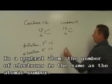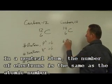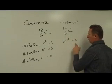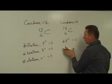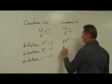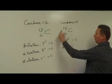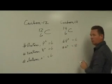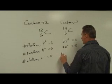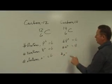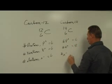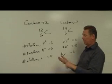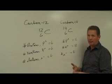Now for carbon-14: the number of protons (P+) is still equal to 6 — same as carbon-12. But the mass is different because the number of neutrons is different. The number of neutrons equals 14 minus 6, which equals 8. That's where the extra mass comes from. And the number of electrons, if it's neutral, is the same as the number of protons — so that's also equal to 6. I've used my nuclide symbol to calculate protons, neutrons, and electrons.